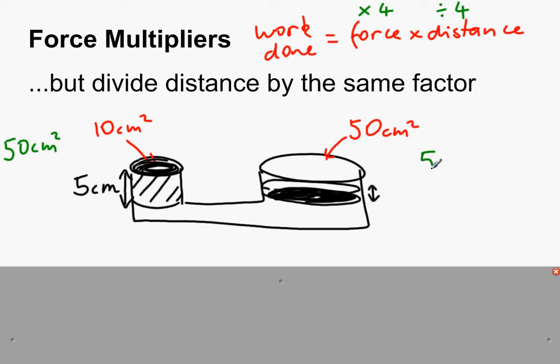Since liquids are incompressible, we must also have displaced 50 centimeters—sorry, did I just say squared? Cubed, my apologies—50 centimeters cubed of liquid there. Therefore we must also have gained 50 centimeters cubed of liquid here.